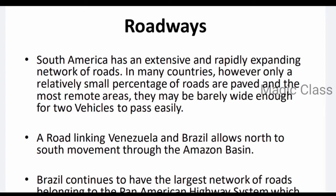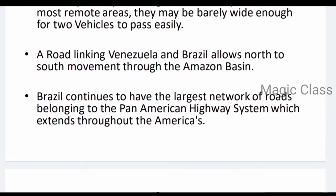However, in remote areas, roads are very small and narrow — often only wide enough for one vehicle at a time. A road linking Venezuela and Brazil allows North to South movement through the Amazon Basin. Brazil has the largest network of roads and belongs to the Pan American Highway System, which extends throughout the Americas.